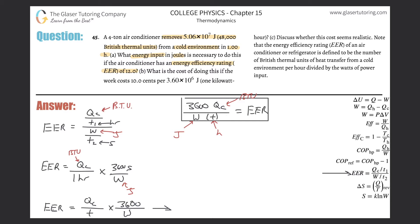So, essentially, what I need to do here is solve this thing for work, and that should be relatively easy. So, this is just 3,600 times the Q sub C, times Q sub C, all then divided by work times time, so work times time is equal to EER. All you literally have to do is solve this thing for W.